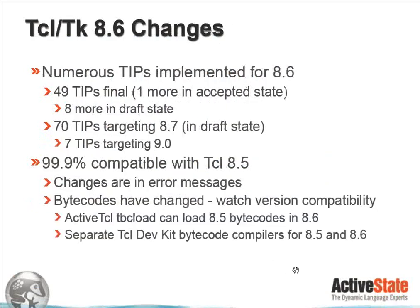So with that said, let's go into 8.6 changes. There are numerous TIPs that have been implemented for 8.6. A TIP is a TCL Improvement Process — a specific change request document that states the rationale and implementation for a key feature change in the core. This wouldn't relate to all of the bugs, but these are actual script or C API level feature changes. There have been 49 TIPs made final, meaning a TIP is moved to final only when it is actually implemented in the core. There's one more in the accepted state, and eight more remain in the draft state — whether they'll be done in the 8.6 timeline requires further discussion and voting.